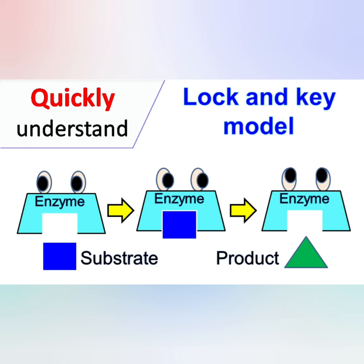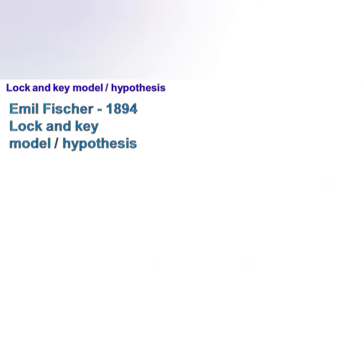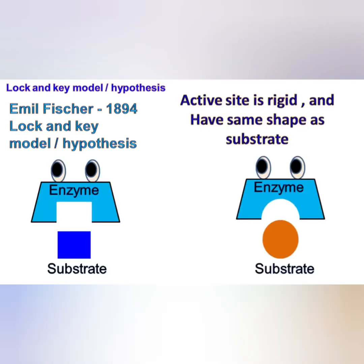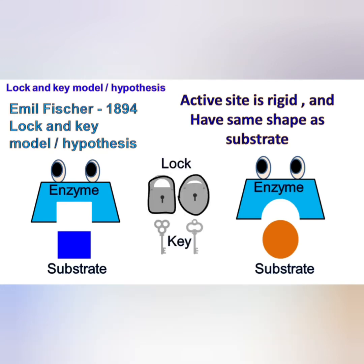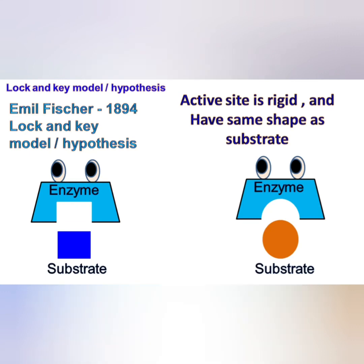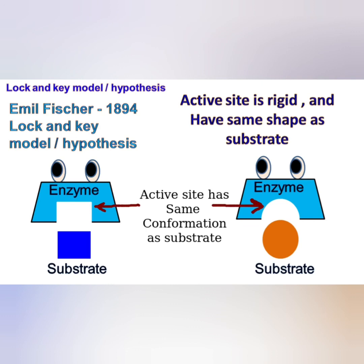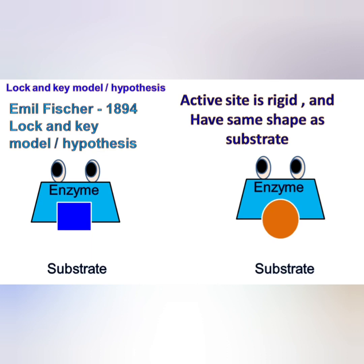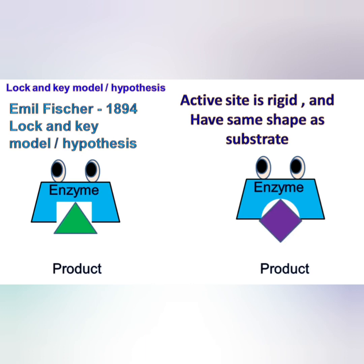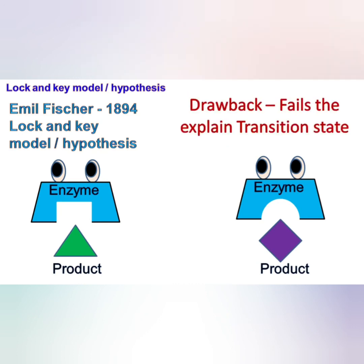The lock and key model is one of the earliest models proposed for the mechanism of enzyme action. It was proposed by Emil Fischer in 1894, based on the fact that enzymes are very specific for their substrate — just like keys are specific for locks. According to this model, the active site of the enzyme has the same conformation as that of the substrate, allowing the substrate to bind in the active site just like a key fits in a lock. One major drawback is that it fails to explain the transition state that occurs when the enzyme binds with its substrate.